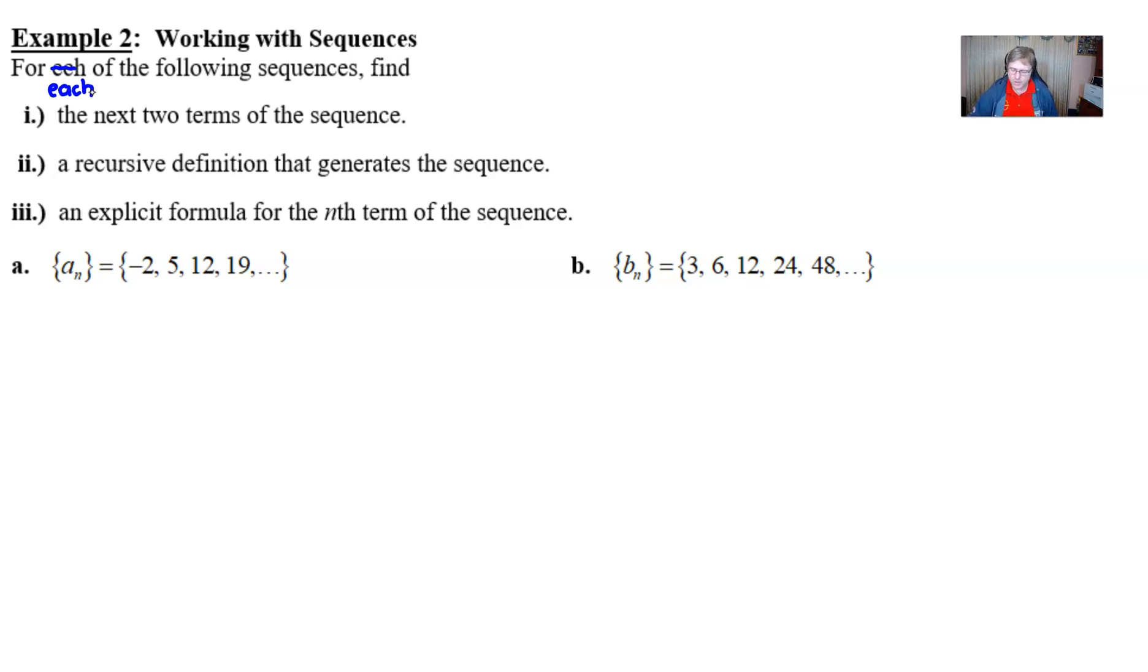We want to break them down one by one. So let's look at part a first. Notice the braces notation for this sequence. A sub n is defined as the set of numbers negative two, five, twelve, nineteen. Now the first thing that you want to do is determine if this is what we call a well-behaved sequence.